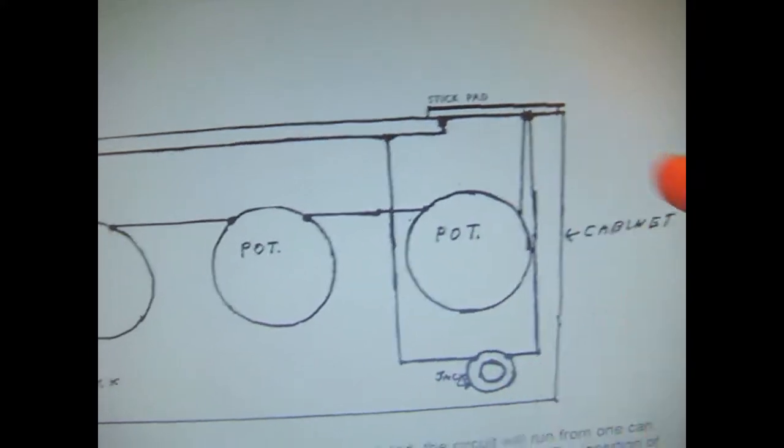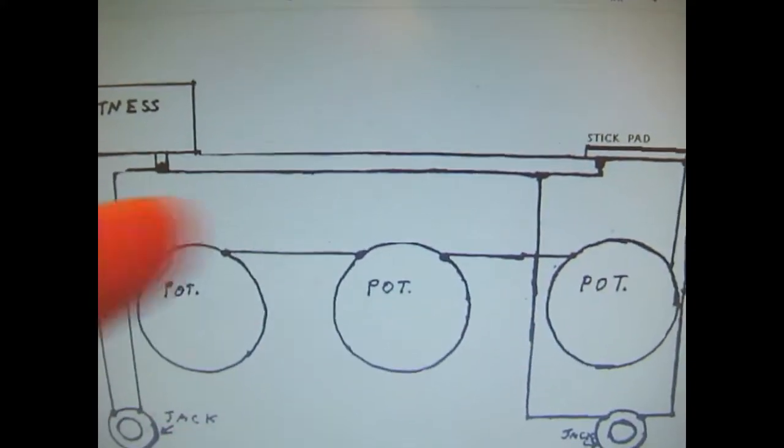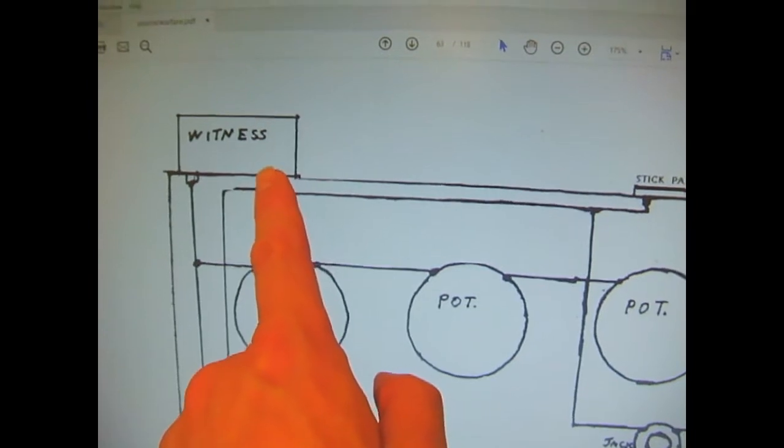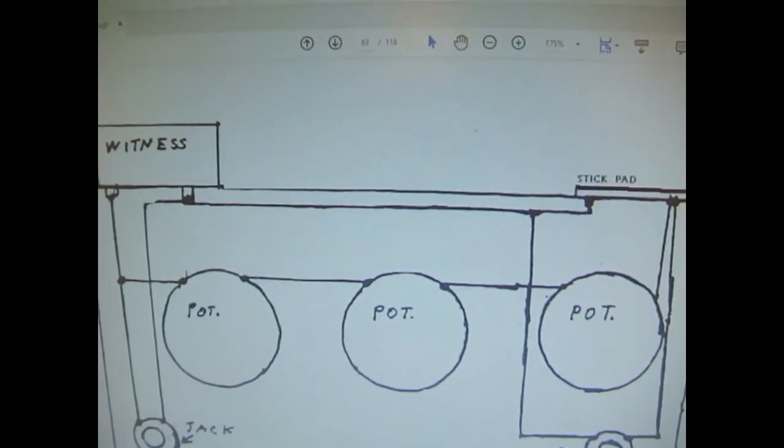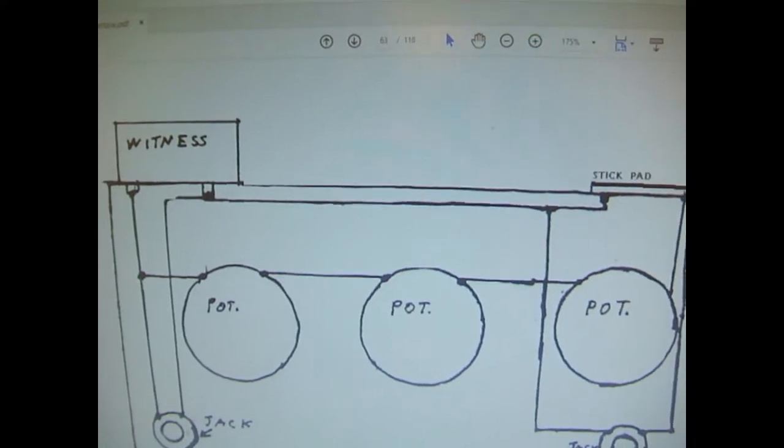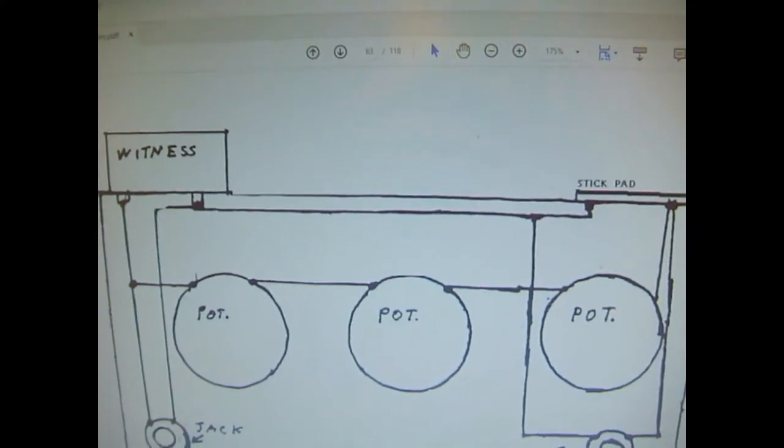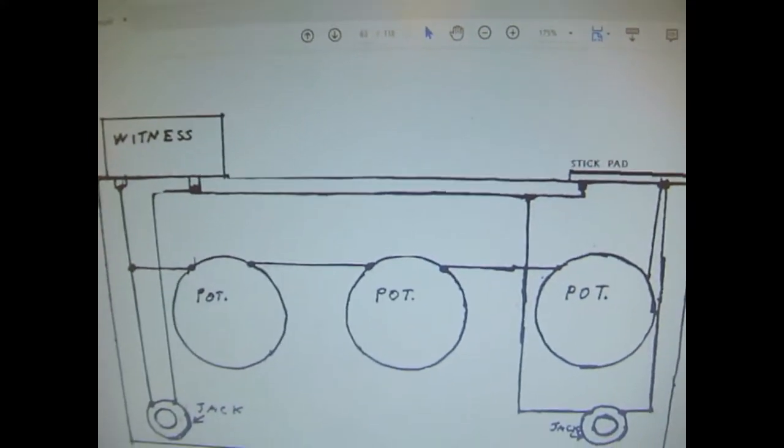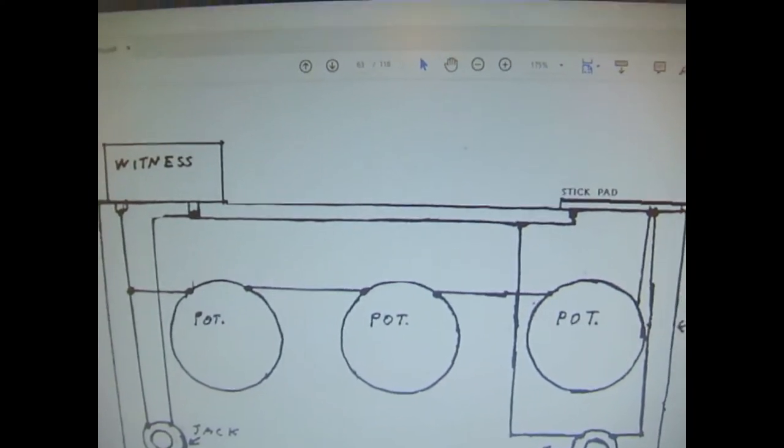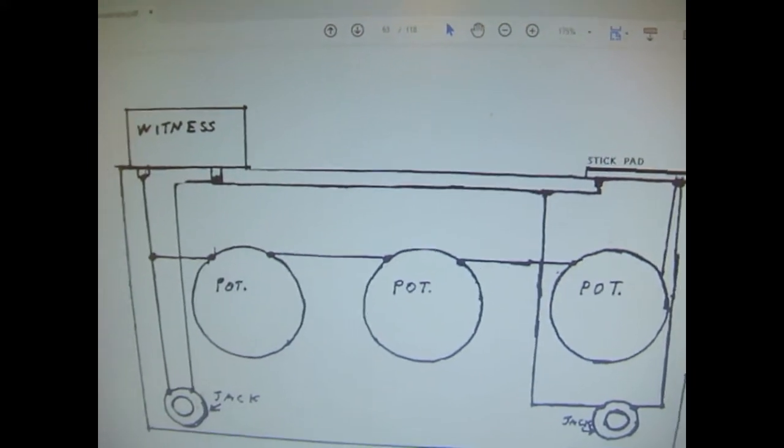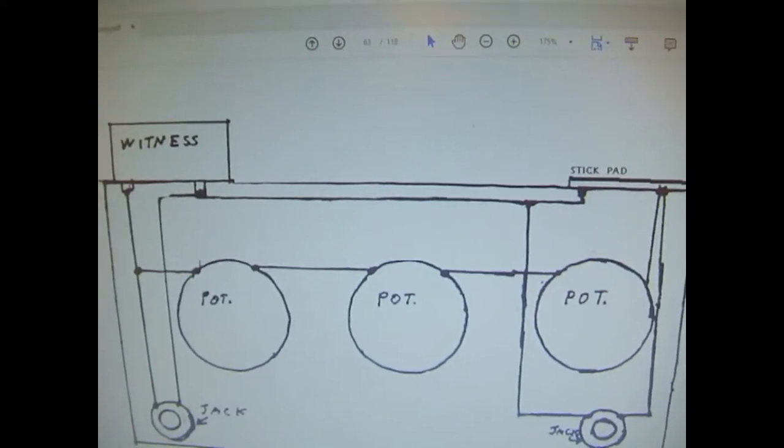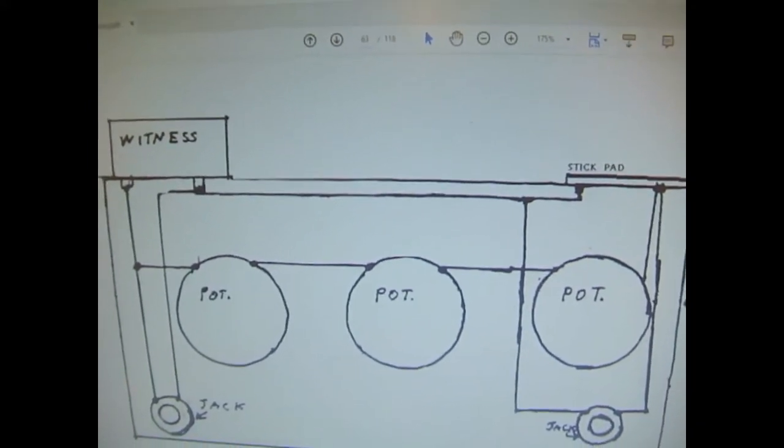And then what I find rather weird is that there is another connecting wire, again from the witness to the stick pad, on the inside of the box. So that means your two plates are connected. So the fact that you've got two plates, that's partially a separation of the mind, rather than just a separation of the physical plates.